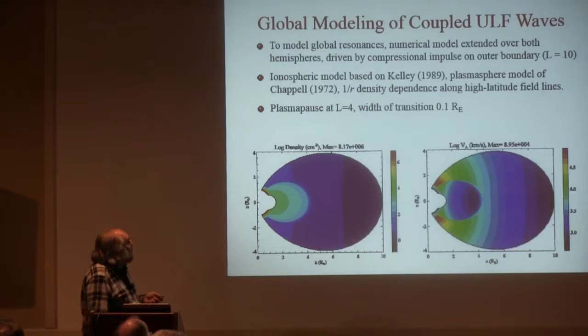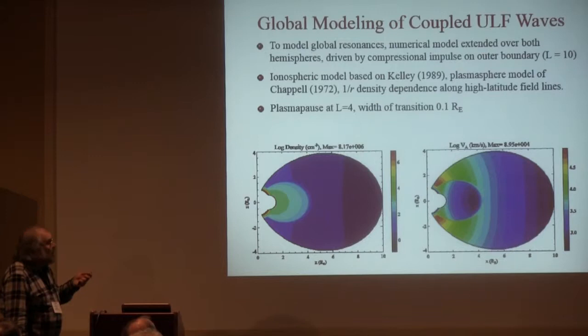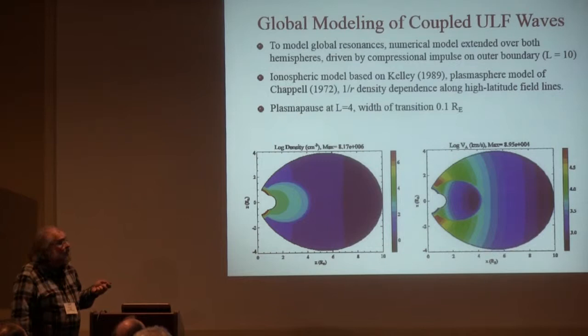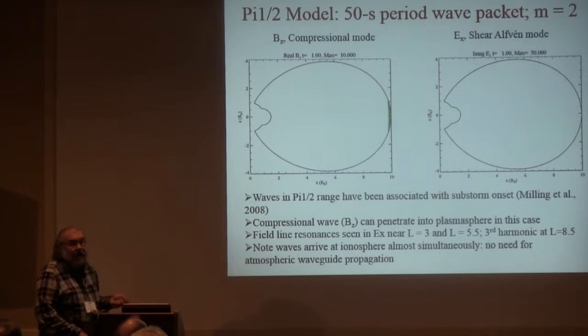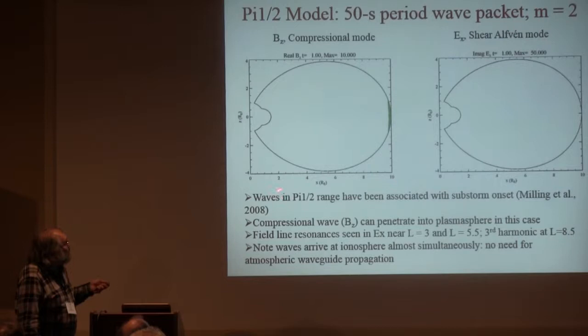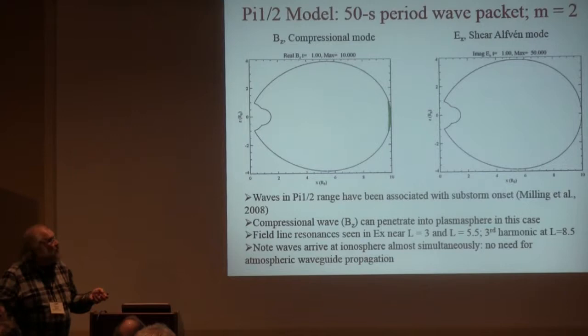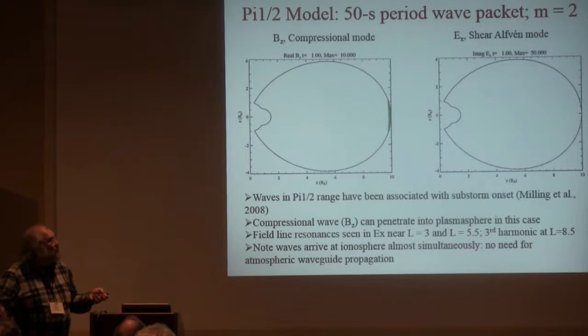To do that, we use basically the same model but going from one ionosphere to the other — inner boundary at L = 1.5, outer boundary at L = 10. We put a plasmasphere with a plasmapause at L = 4, based on Rick Chappell's profiles. We drive the outer side of the system with a compressional wave pulse. We're focusing on the PI 1-2 range, because the Alberta group has shown that waves in this range — the boundary is a 40-second period — show interesting behavior. There's really no fundamental difference between 39-second waves and 51-second waves; 40 seconds is just an arbitrary number. So we use 50 seconds as a nice number to drive the system.